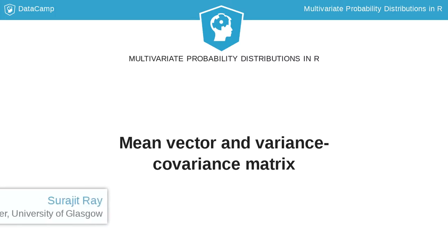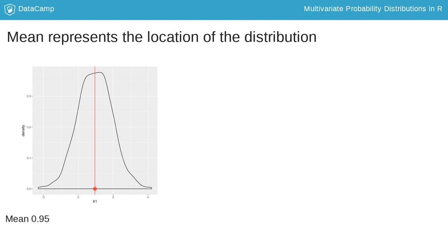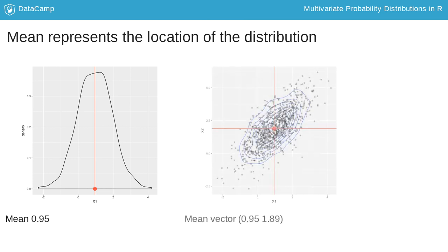Now that we have read multivariate data, we will explore the dataset by looking at various summary statistics like means and variances. The univariate mean identifies the location of a distribution on the number line. For multivariate data, the mean identifies the location of the distribution in a multidimensional space.